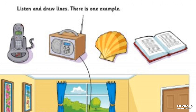Five. And now put the shell on the table next to the robot. Sorry? Put the shell where? Put it on the table next to the robot. Yes. OK.